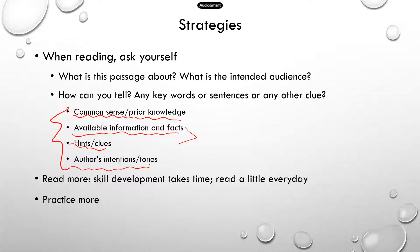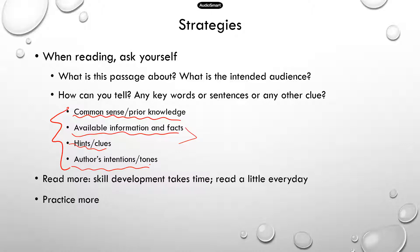Also consider the author's intentions and tone. Is the author criticizing something, always being negative about something? For example, if the author is critical of an economic incentive policy and there's a question about what conclusions you can draw, the answer is probably that the author does not think this policy is a good idea. Once you identify the author's intentions, that will help you draw conclusions.